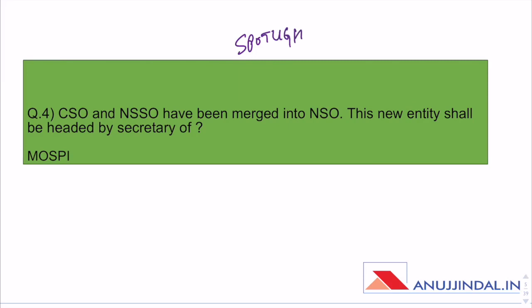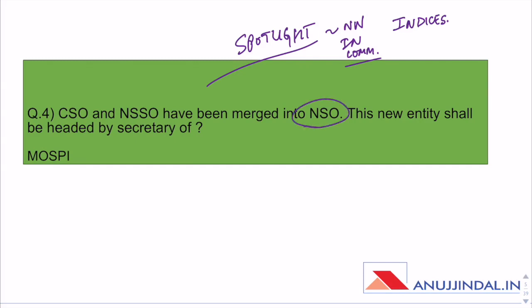You can skip appointments, sports news, and important days — those are not asked in Phase 2. The important areas often asked in Phase 2 from Spotlight are national news, international news, and maybe committees or indices if they are covered. Do cover those areas.